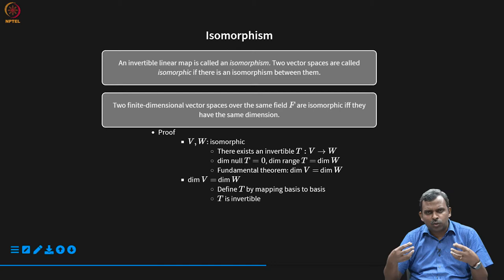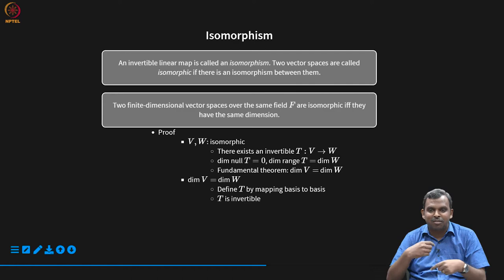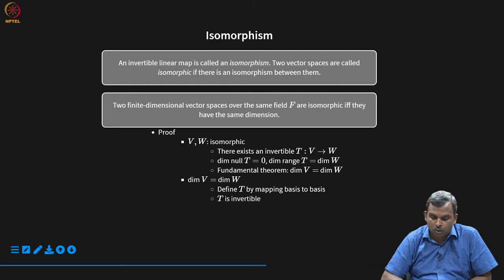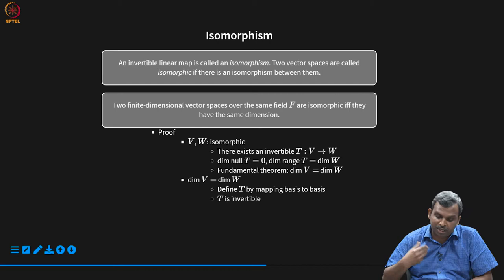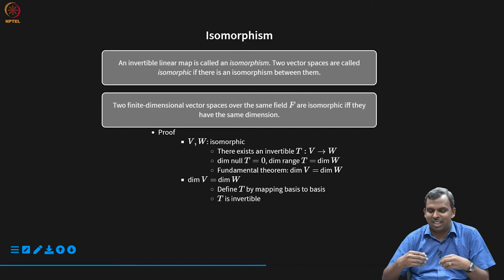The same holds for subspaces — subspaces are also vector spaces, and two subspaces are isomorphic when they have the same dimension. The proof is an if-and-only-if argument. For one direction: if V and W are isomorphic, there is an invertible transform T from V to W. Its null space has dimension 0 (since it is injective), so by the fundamental theorem, dim(V) = dim(W). For the other direction: if dim(V) = dim(W), you find a basis for each, map basis vectors to basis vectors, and the resulting linear transform is injective and surjective, hence an isomorphism.